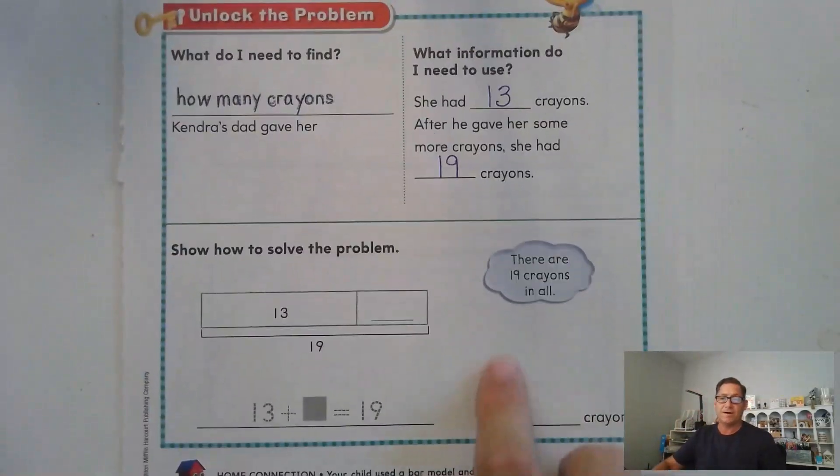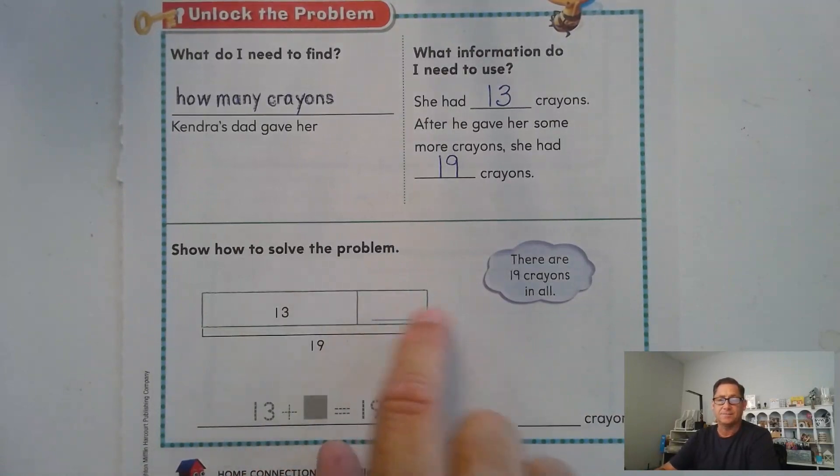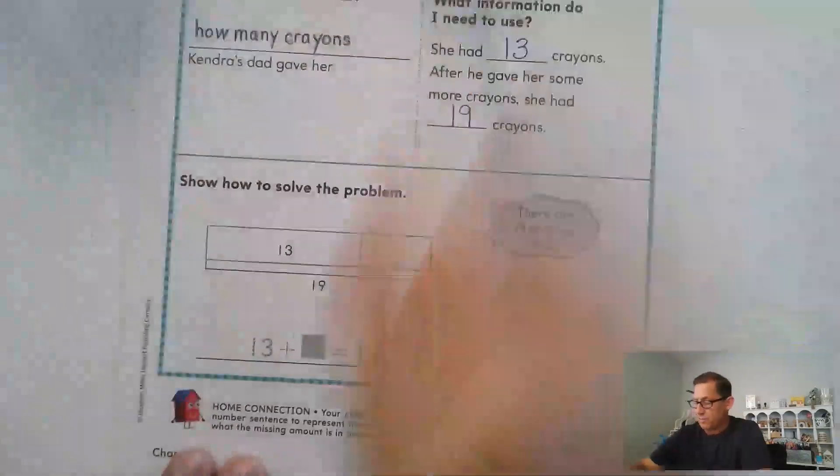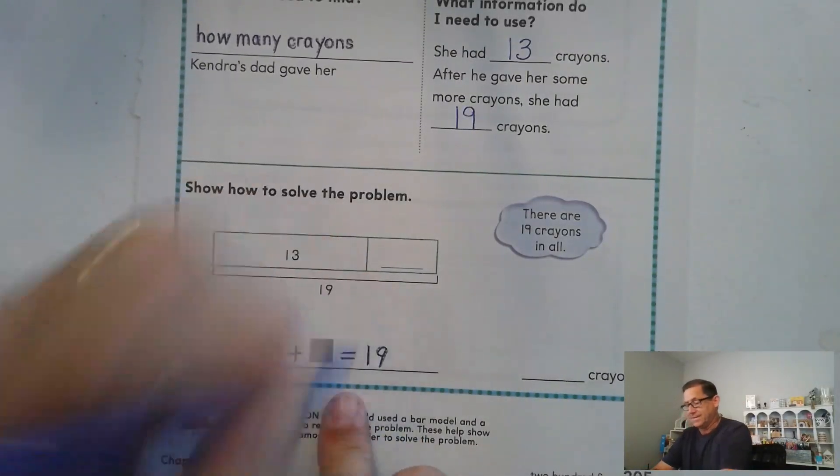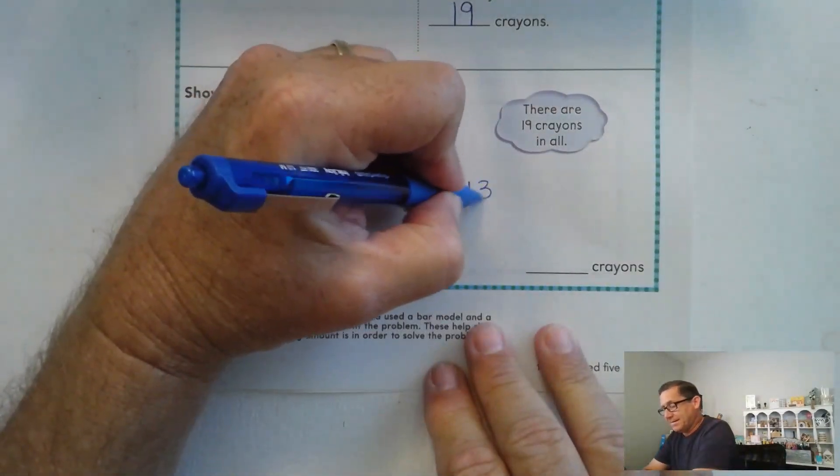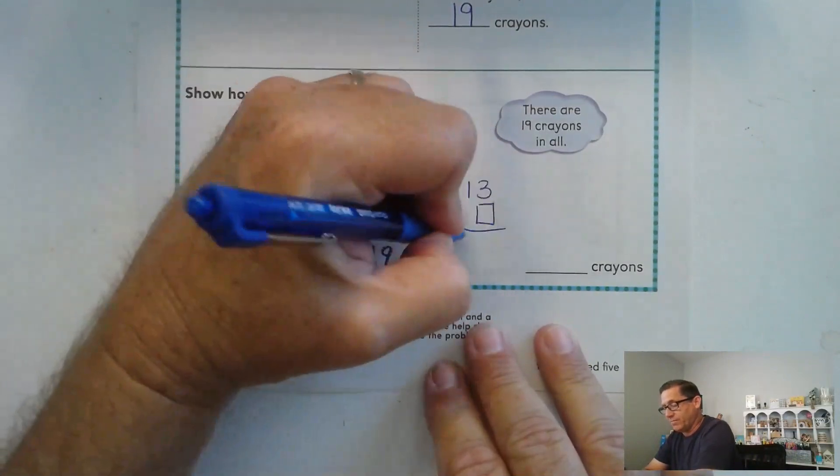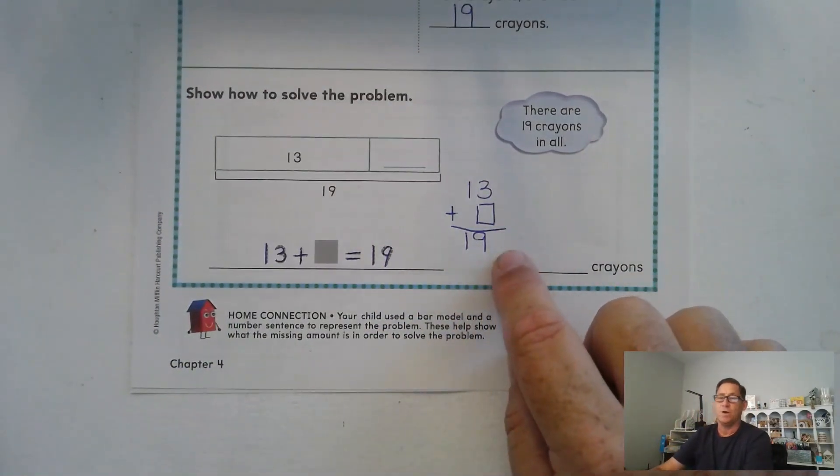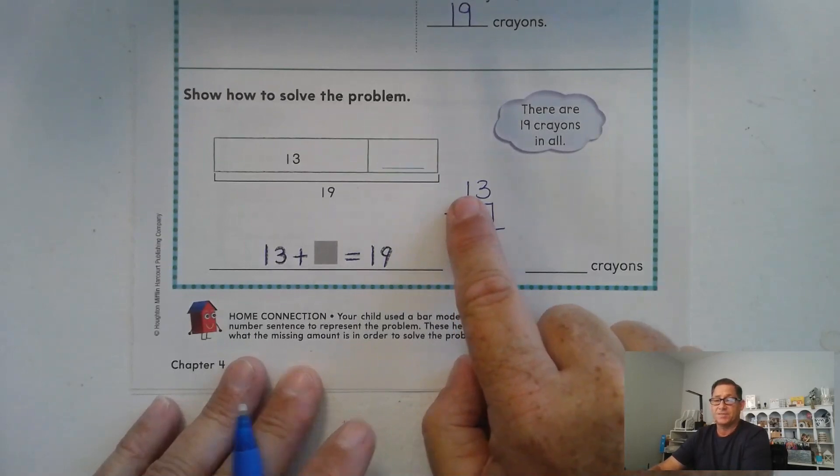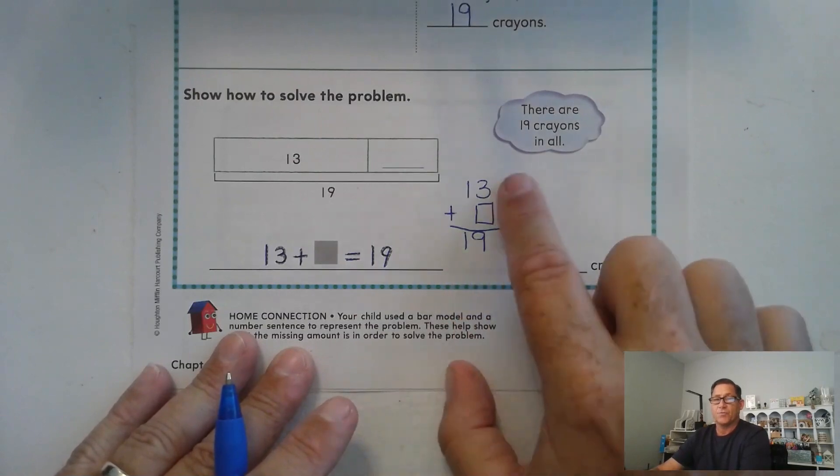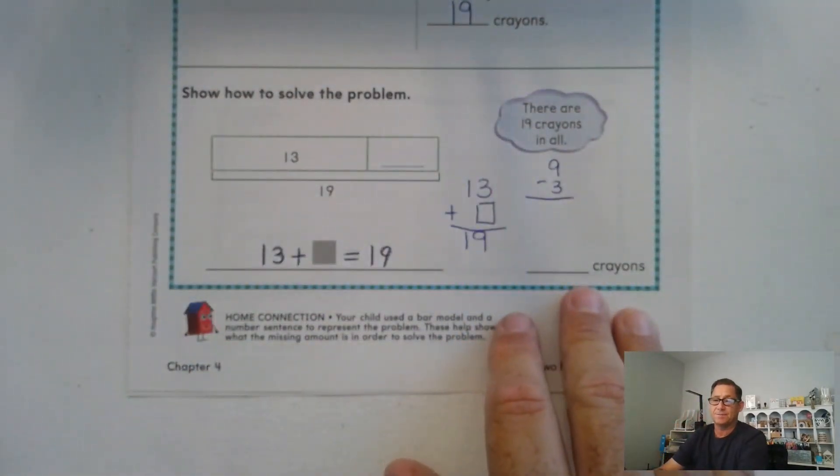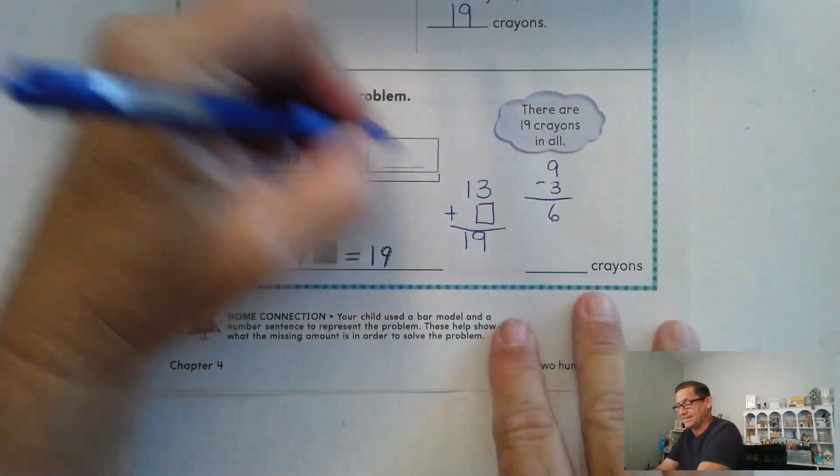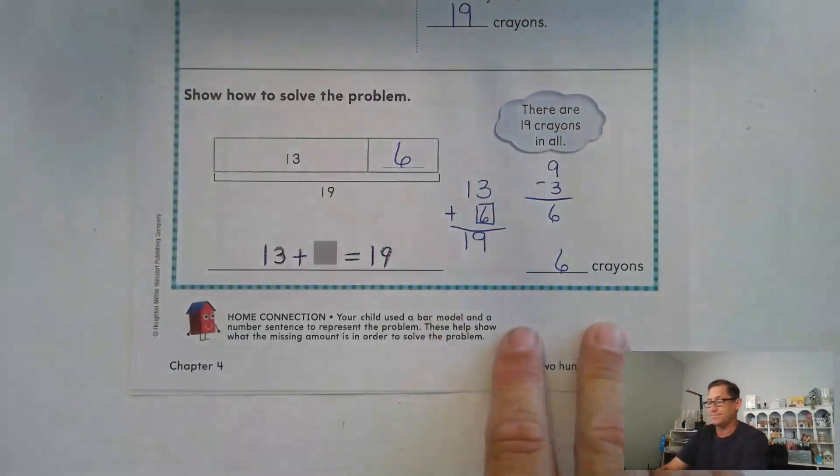We know that there are 19 crayons in all, so if we combine these two boxes they have to add up to 19. So an addition problem for this could be 13 plus what is 19. If we had this stacked like our regular addition problem that we've been practicing, we have to come up with a number here that would give us nine ones. I know it's not 10 or more because my answer has one 10 and 13 already has one 10, so they didn't add any more to the tens. So 3 plus what is 9? Well, that's the same thing as saying 9 minus 3. So if you're at 9 and you have to take away 3, you'd be at 6. So 13 plus 6 is 19.